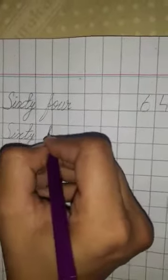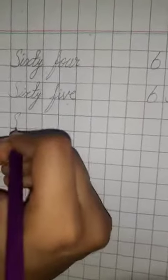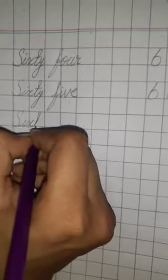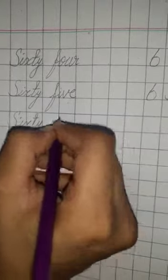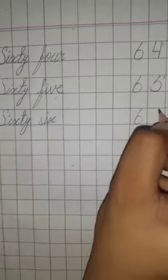Five - F, I, V, E, five. Sixty-five. The first word is capital, all remaining words are small. Sixty-six.